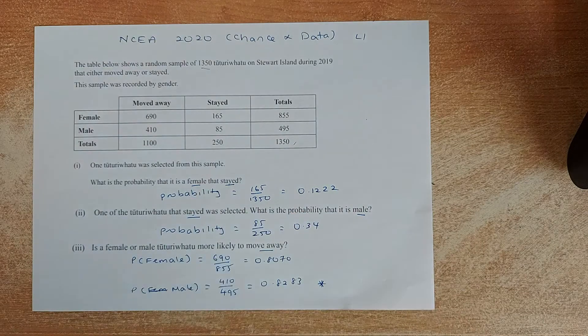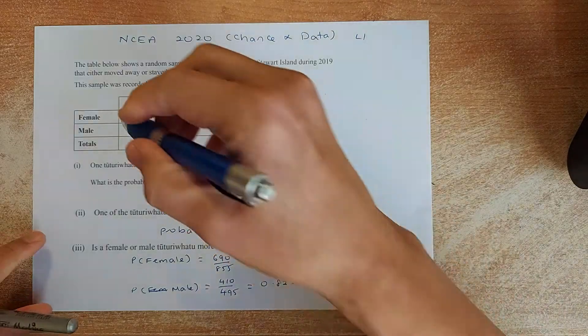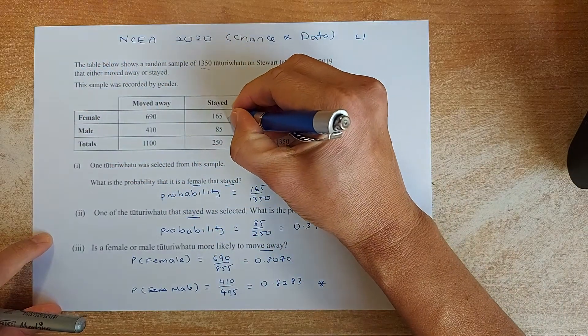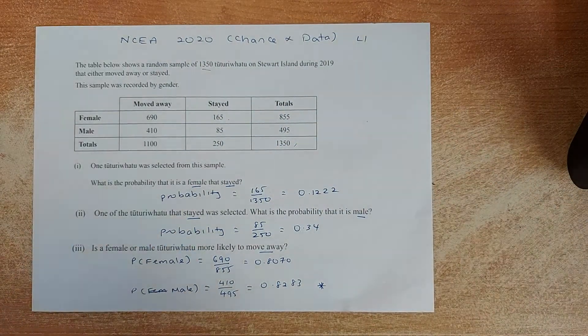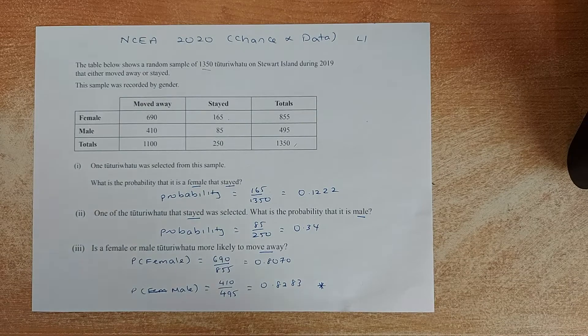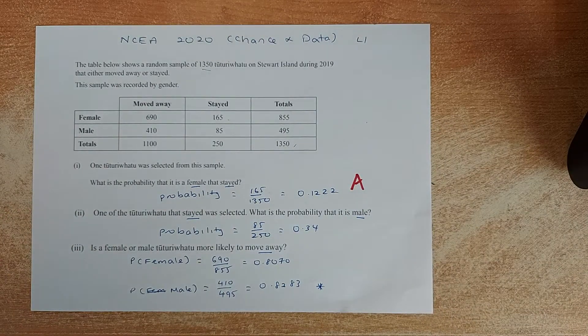So once you have the table, you need to answer the question. One of the birds was selected. What is the probability that the female who stayed? So female who stayed is going to be this number here. So 165 out of the total, so 165 over 1350. And the answer is 0.1222, and that will give you a simple achieve.